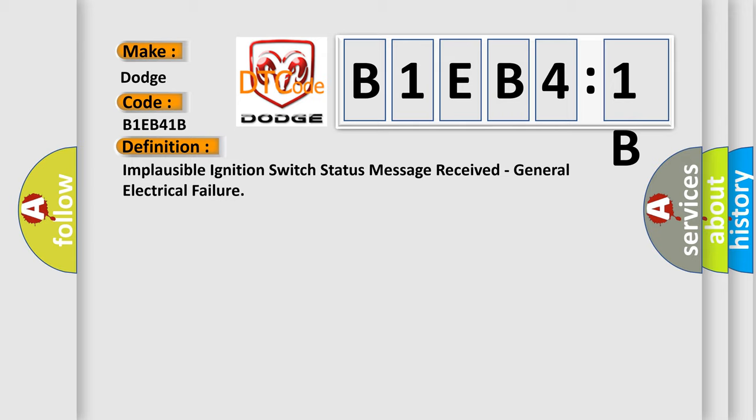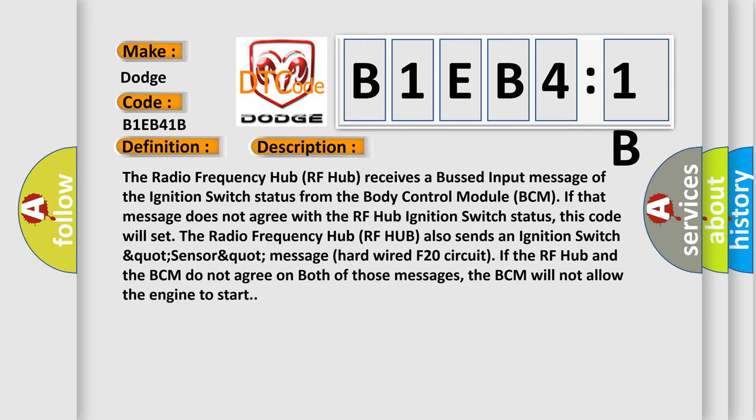The Radio Frequency Hub (RF Hub) receives a bussed input message of the ignition switch status from the Body Control Module (BCM). If that message does not agree with the RF Hub ignition switch status, this code will set. The Radio Frequency Hub (RF Hub) also sends an ignition switch Quad Sense message via hardwired F20 circuit.